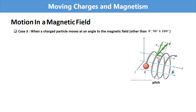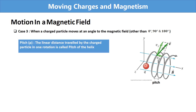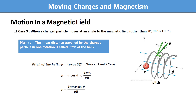Here we define a new term: pitch. Pitch is the linear distance traveled by the charged particle in one rotation. Using the formula distance = speed × time, we use vcosθ as the speed — because it is the component of velocity in the linear direction — and the time period T for one rotation. So the equation for pitch is vcosθ × T. Substituting the expression for time period gives the full equation for pitch.